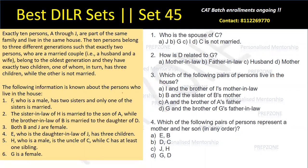So exactly 10 persons A through J are part of the same family and they live in the same house. The 10 persons belong to three different generations such that exactly two persons who are a married couple belong to the oldest generation and they have exactly two children — one of whom in turn has three children while the other is not married. It's a classic family tree problem where we have to identify who's male, who's female, and who is who. We'll have to map that tree to solve this question.